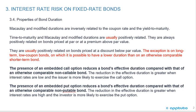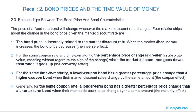This slide is meant as a review, recalling bond prices, time value of money, and the relationship between bond price and bond characteristics. The price of a fixed-rate bond will change whenever the market discount rate changes. There are four relationships about the change in bond price given the market discount rate. The first is that bond price is inversely related to the market discount rate.